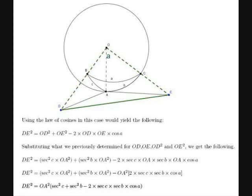We now have two equations for DE squared. By substitution we set them equal, then solve for cos A. Using the identity sec² x equals 1 plus tan² x, the first two terms simplify, and the tan² C and tan² B terms cancel on both sides. Factoring out a 2 and multiplying both sides by cos C times cos B, we arrive at: cos A equals cos B times cos C plus sin B times sin C times cos A, which is the cosine formula for spherical trigonometry.